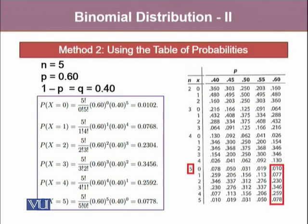Using the example we talked earlier, when we were seeking 4 successes out of 5 and we constructed the whole probability distribution, let's look at the probabilities of this table. When N is equals to 5, and X can possibly take values 0, 1, 2, 3, 4, and 5, our probabilities with P = 0.60 are given right here.